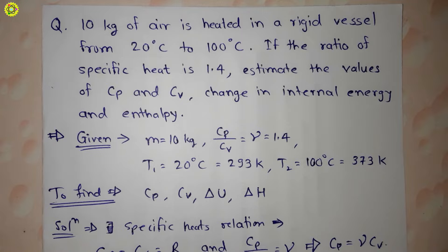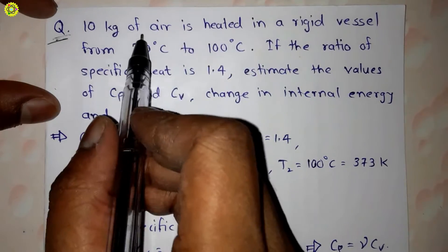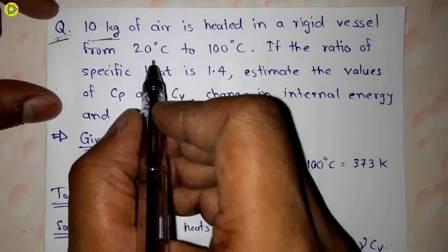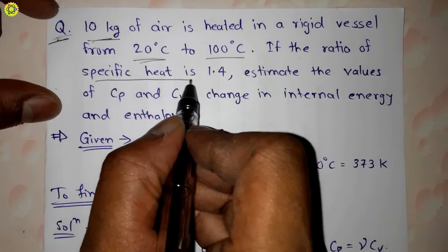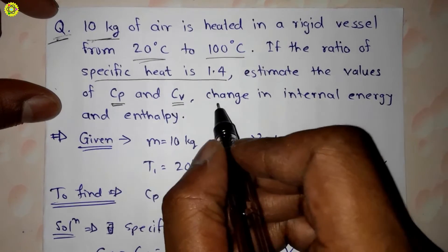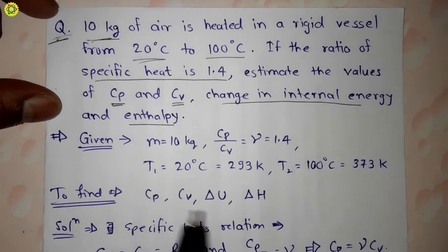Hi students, welcome. In this video we will understand how to use the relationship between cp and cv to find out the change in internal energy and enthalpy. The question is: 10 kg of air is heated in a rigid vessel from 20 degrees Celsius to 100 degrees Celsius. If the ratio of specific heats is 1.4, estimate the values of cp, cv, and the change in internal energy and enthalpy.